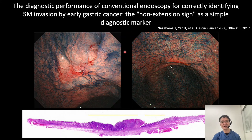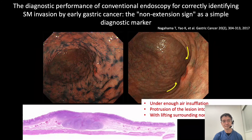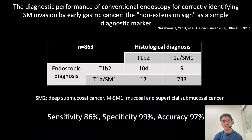One useful finding to make diagnosis of depth of tumor invasion is the non-extension sign. In intramucosal lesions, with air insufflated extensively, the lesion becomes flattened. In submucosal invasive lesions, when air is extensively insufflated, the lesion protrudes into the lumen, lifting the surrounding non-neoplastic mucosa upward at the margin by invasive cancerous tissue. It is reported that this sign has very good accuracy for diagnosis of tumor depth of early gastric cancer. We are now trying to validate this result in a randomized controlled trial.